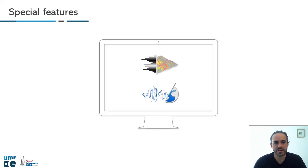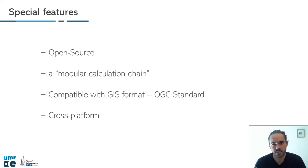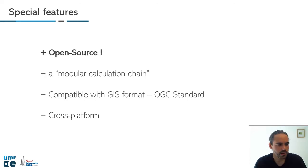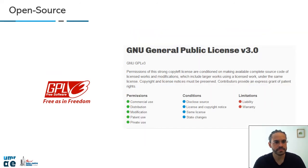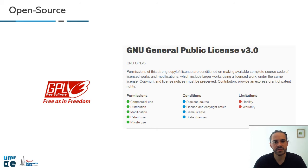What about special features in noise modeling? First, it's an open source software. It has a modular calculation chain, which I will explain after. It's compatible with GIS format and with OGC standard, and it's a cross-platform software. The license we decided to use is GPL version 3, which is a quite permissive license.